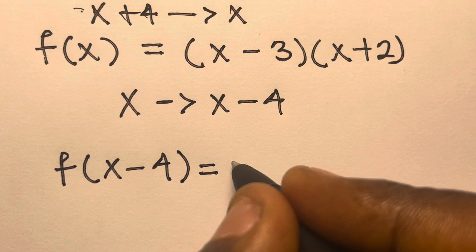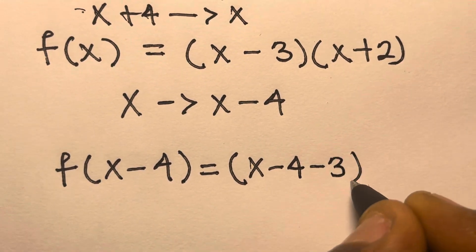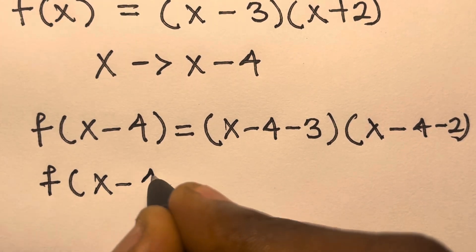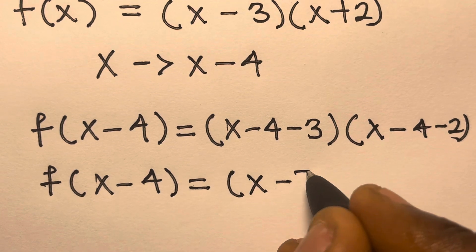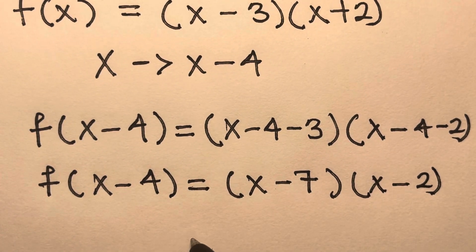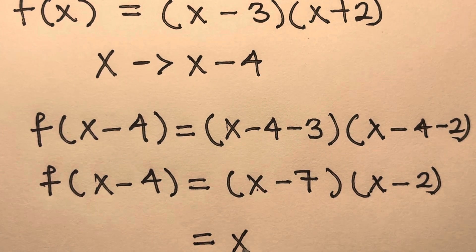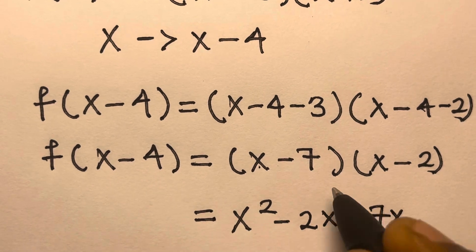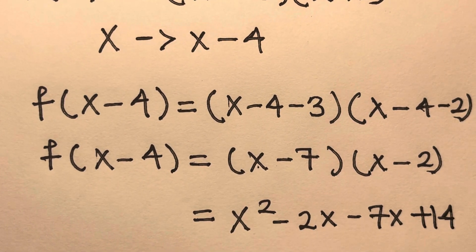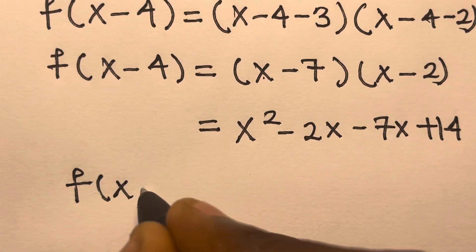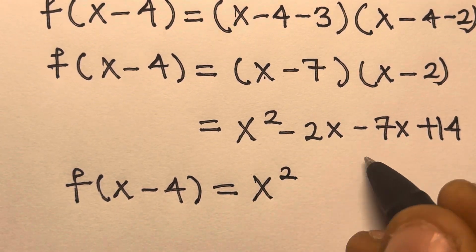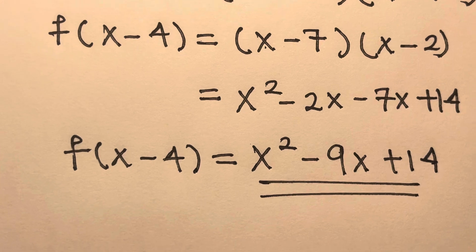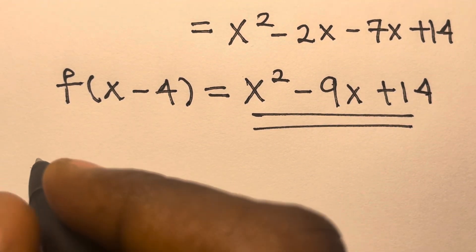f(x-4) equals (x-4-3) times (x-4+2), which is (x-7)(x-2). Expanding: x times x gives x squared, x times minus 2 gives minus 2x, minus 7 times x gives minus 7x, and minus 7 times minus 2 gives plus 14. So f(x-4) equals x squared minus 9x plus 14.